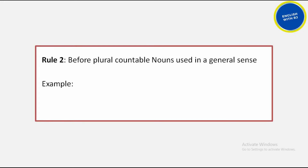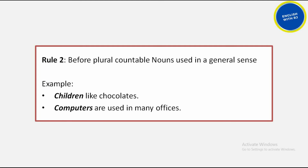The second rule is about plural countable nouns. When we talk about plural countable nouns in a general sense, no article is used. For example, 'computers are used in many offices' — there is no article before 'computers.' You may have noticed this in a previous lesson with the example of 'a snake' versus 'snakes' — no article appears in front of the plural 'snakes.'